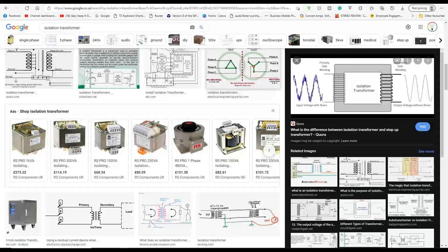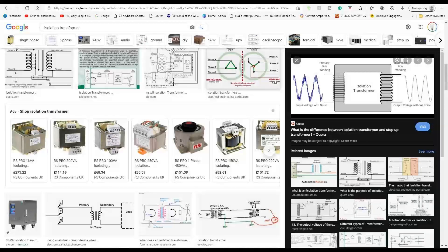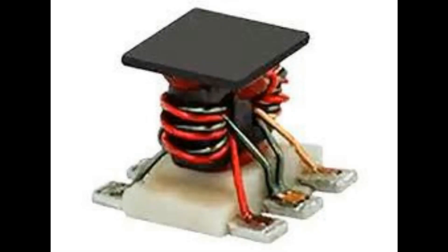These transformers can weigh five, ten, fifteen, twenty pounds depending on the rating they are. And then we get to this little one. This is about two ounces of transformer. You can see how small that is. That's out of a radio.